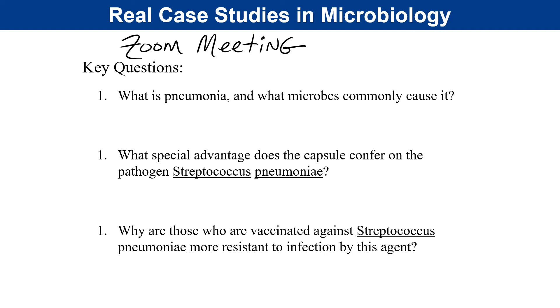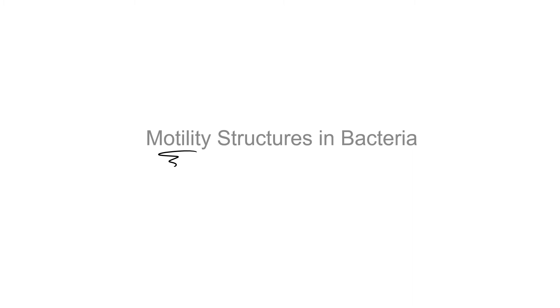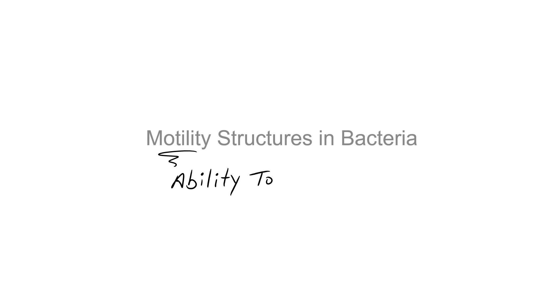This next section will detail the motility structures in bacteria. Motility refers to the ability for bacteria to move — cellular movement or ability to move. Not all bacteria have the ability to move, but if we say an organism is motile, it must have some sort of structure or mechanism by which it can move about its environment.